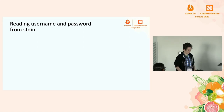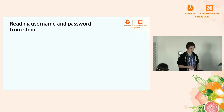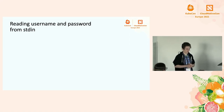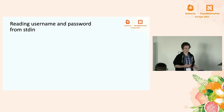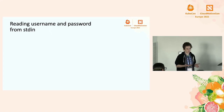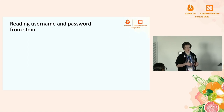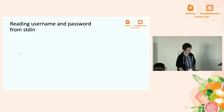Another important thing to handle is reading from standard in — for example, username and password. You can set interactive mode in your kubeconfig to 'if available' or 'always'. With 'always', if no TTY is available, kubectl will immediately fail without invoking the plugin. Alternatively, you can get credentials from a file or environment variables — so interactive mode isn't always required.